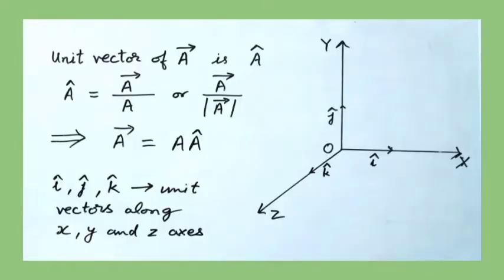Next is the unit vector. It is a vector which has a magnitude of 1 or unity. A unit vector of a given vector can be obtained by dividing it by its magnitude. The unit vector of vector A is represented as A with a cap, pronounced as A-cap, A-hat, or A-caret. A vector can be expressed as its magnitude times the unit vector along its own direction. As seen in the diagram, i, j, and k are the unit vectors along the x, y, and z axes respectively.